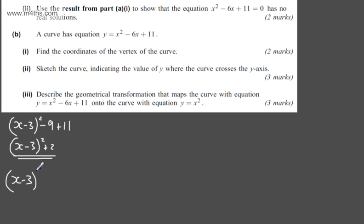So we'll have (x - 3)² + 2 = 0. Subtracting now the 2 from both sides, (x - 3)² would be equal to -2.